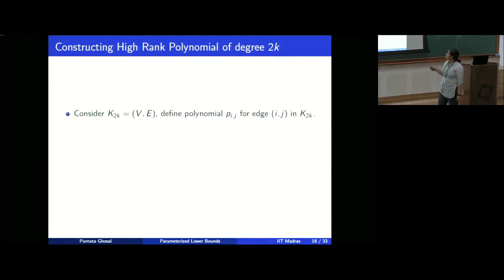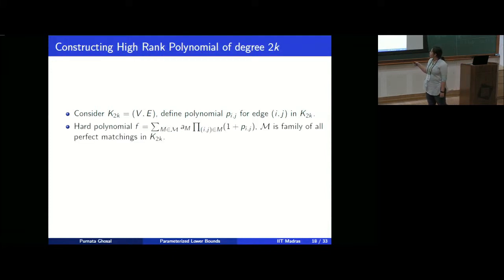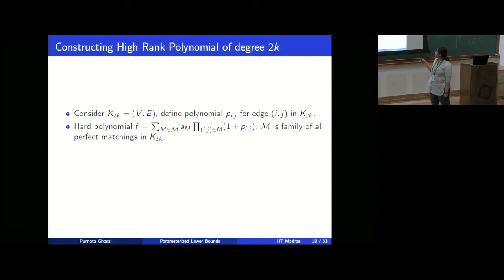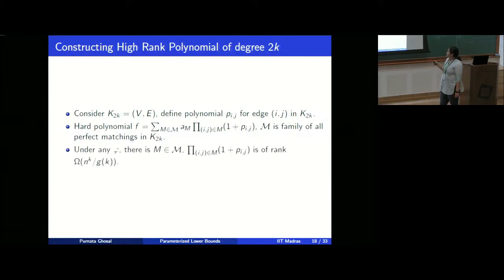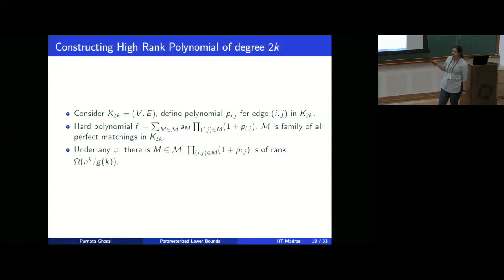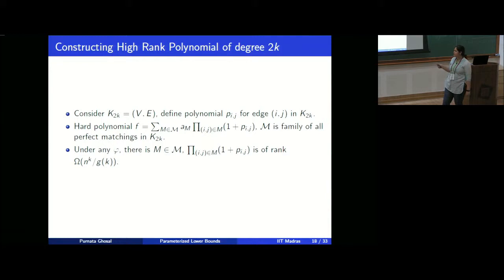For that we consider the complete graph on 2k vertices. For each edge we define a polynomial p_{ij}, and the final polynomial f is defined as a sum over all perfect matchings in K_{2k}: a formal variable a_M times the matching polynomial, which is basically the product of (1 + edge polynomial) for every edge in that perfect matching. We will show there exists some good perfect matching M such that setting a_M = 1 for that matching and 0 for all others, the matching polynomial is full rank — n^k divided by some function of k.